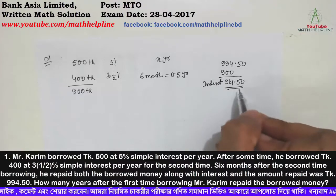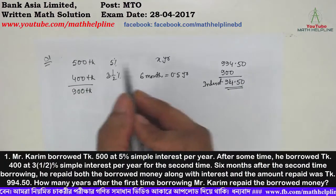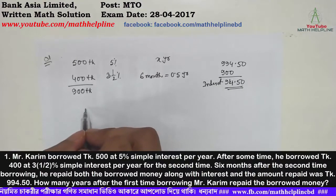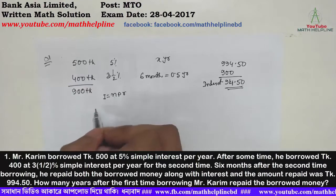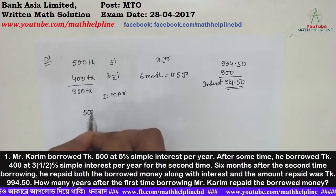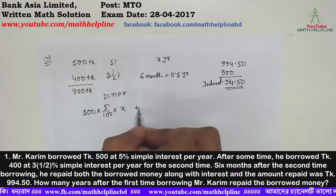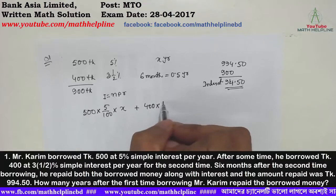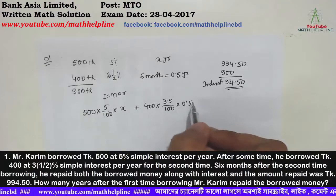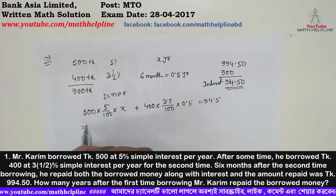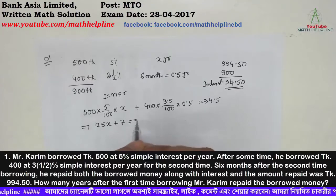Total interest is 94.50. We know the formula I = PNR, where n equals time, P is principal, and r is rate of interest. For the first case: 500 into 5/100 into x. Plus for the second case: 400 into 3.5/100 into 0.5 years equals 94.50. After calculation we get 25x plus 7 equal to 94.50.